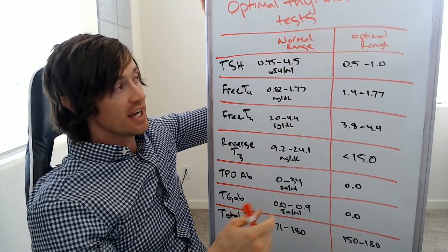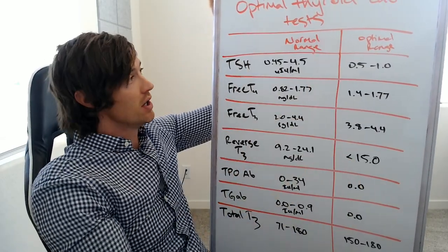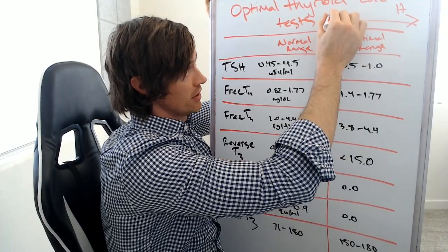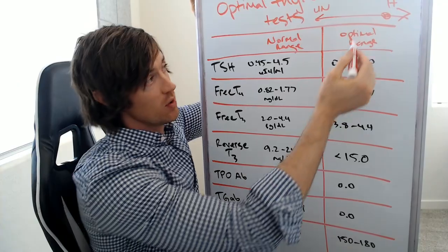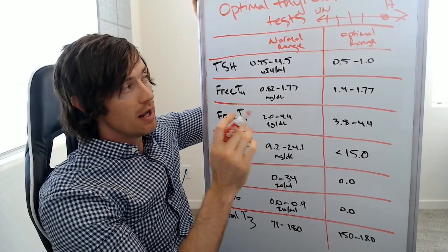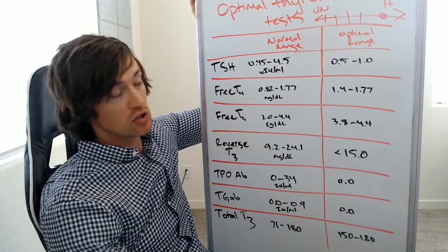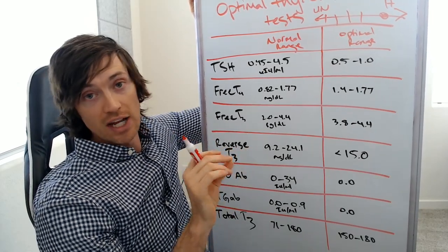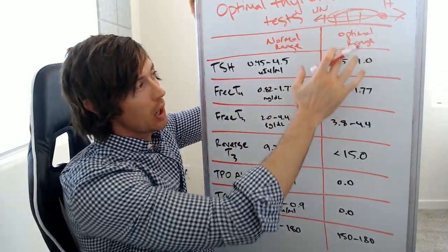Now, why this matters is because when you look at thyroid function, you want to look at it like on a scale or a spectrum. So imagine over here we have healthy and then we have unhealthy. You want to be as close to the healthy area as you can possibly be. What may happen is that you have people who are at various points along this spectrum — each person is a little bit different. Most doctors look at thyroid function as either on or off, but that misses all the people in the middle. So that's why we care about these optimal ranges.